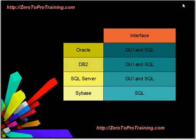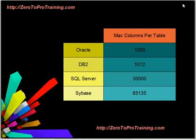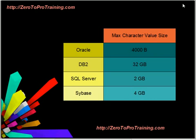These are the maximum database sizes. These are the maximum database table sizes. These are the maximum row sizes. These are the maximum number of columns a table could have. These are the maximum binary value sizes. These are the maximum character value sizes. These are the maximum numeric value sizes. Here are the maximum column name sizes.